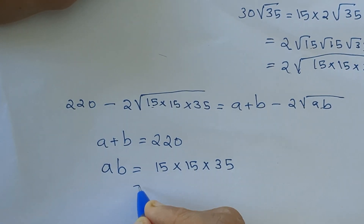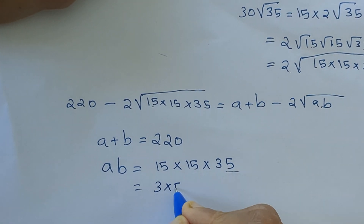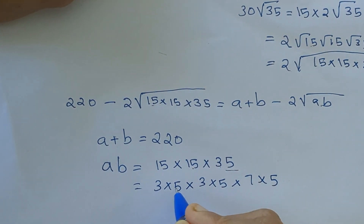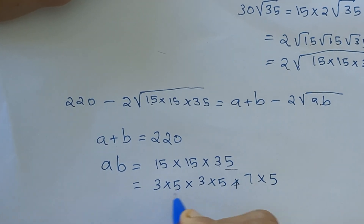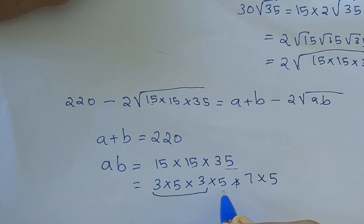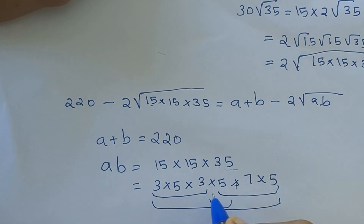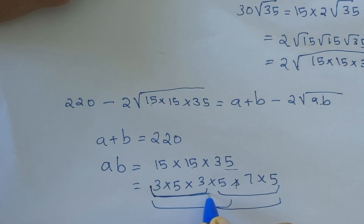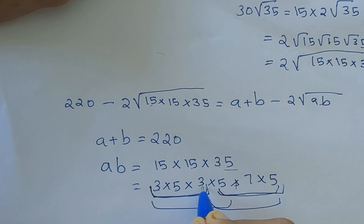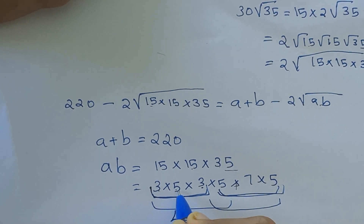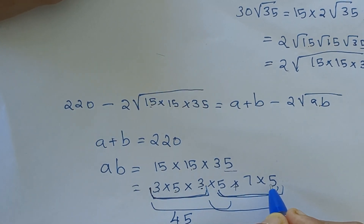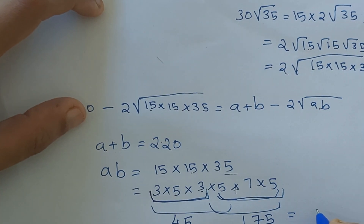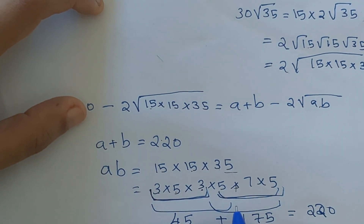To find those numbers, let's factorize: 15 is 3 × 5, and 35 is 7 × 5. We try different combinations of these factors such that when added they give 220. Taking 3 × 5 × 3 gives 45, and 5 × 7 × 5 gives 175. When added: 45 plus 175 equals 220. This combination is correct.